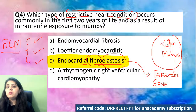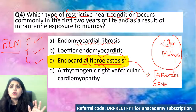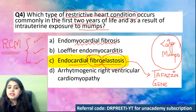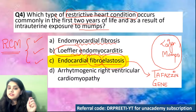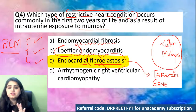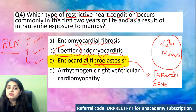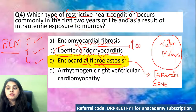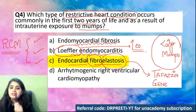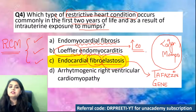So the classical case: endocardial fibroelastosis — restrictive heart condition, less than 2 years of age, mumps patient. Coming to the last MCQ: a 35-year-old woman with mild chest pain has a mid-systolic click followed by a late systolic murmur, no history of rheumatic heart disease. Which histopathology of the mitral valve is more likely — degenerative calcific deposits, myxomatous degeneration, lymphocytes and macrophages, or fibrin, inflammatory cells and bacteria?